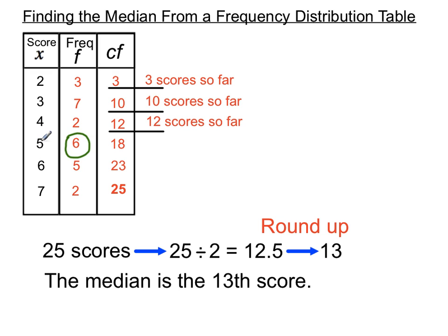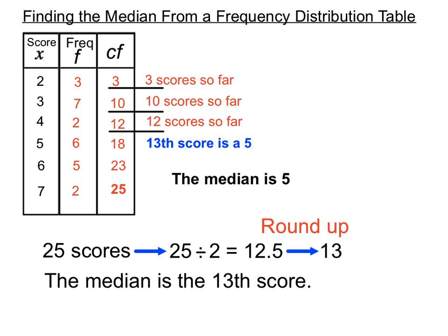Looking at the frequency column, the next six scores after those 12 are all fives, because the cumulative total goes from 12 up to 18. So the 13th score must have fitted in just after the 12th score — and all six of those scores are fives. Using the cumulative frequency column, the 13th score must have been a five, so the median of this set of scores is five.